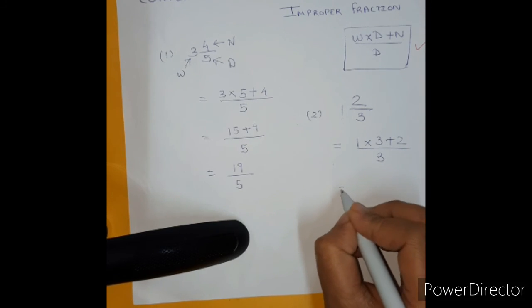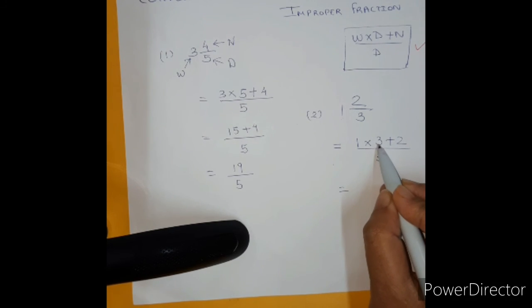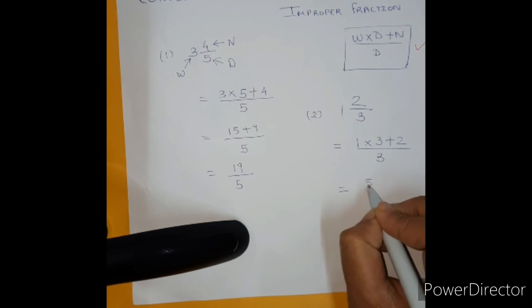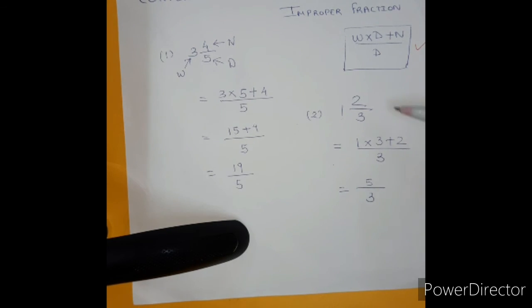Denominator remains the same which is equal to 1 multiplied by 3 gives you 3 plus 2. 3 times 1 is 3, gives us 5 upon 3. So mixed fraction is converted to improper fraction.